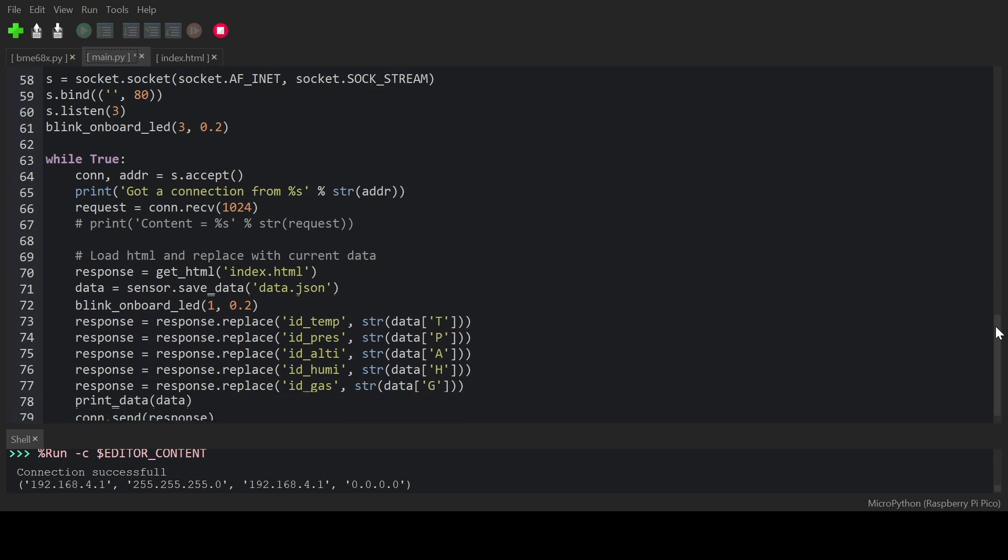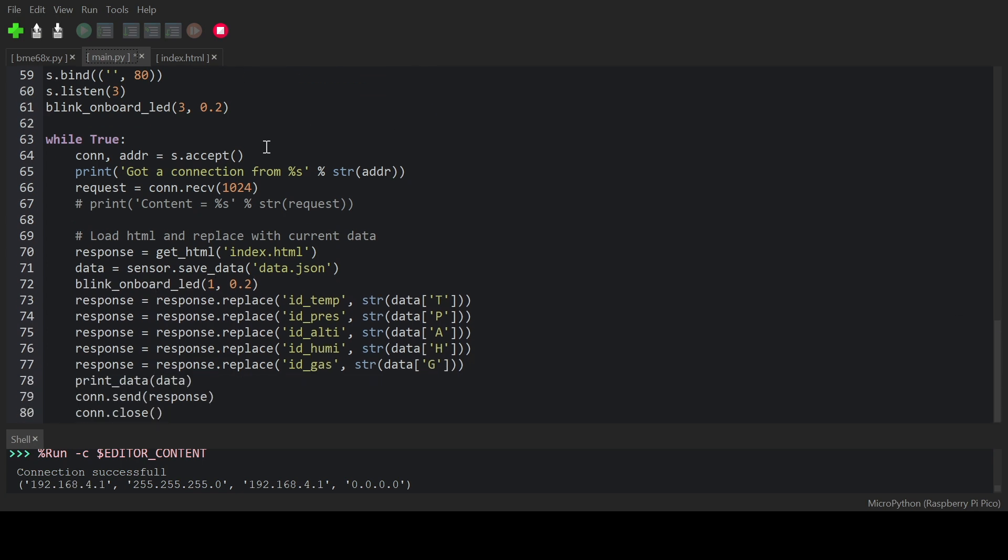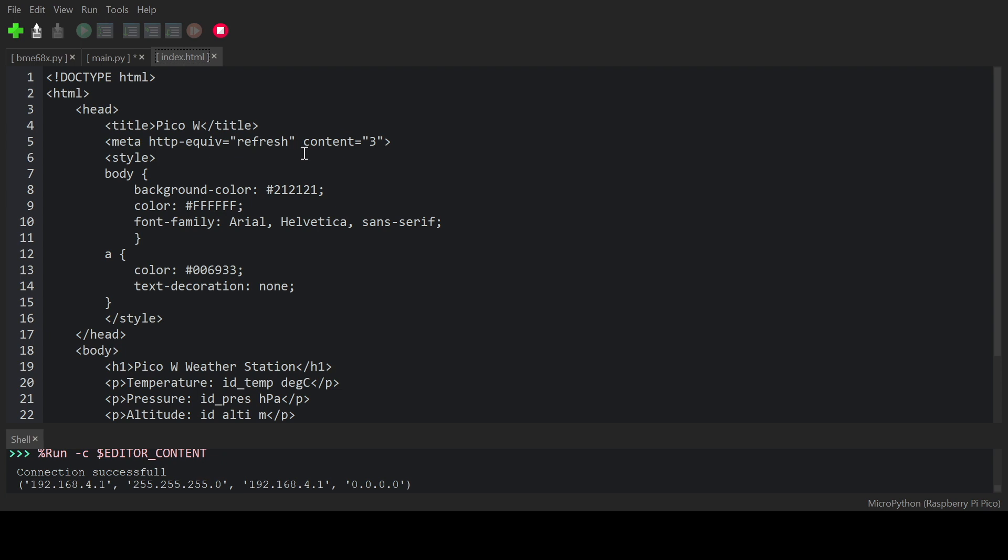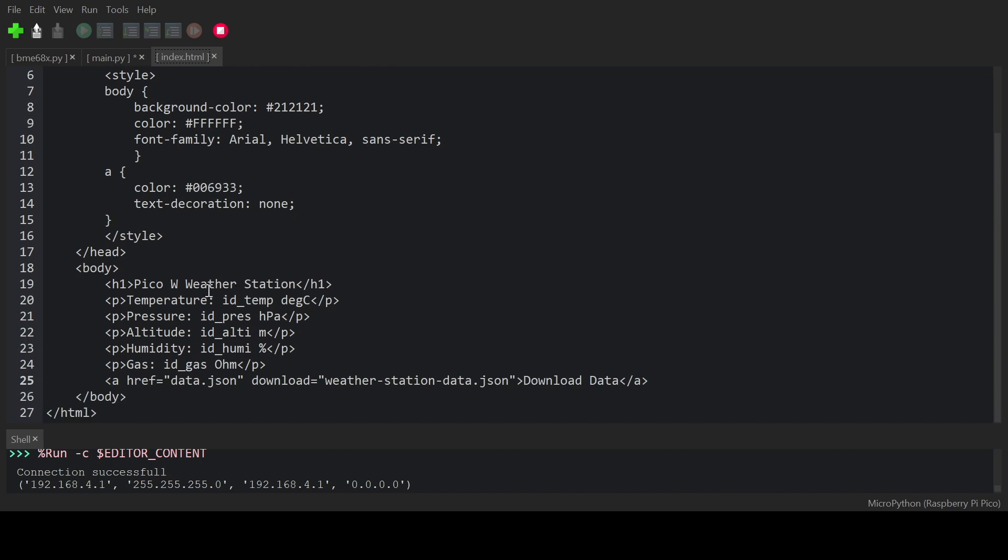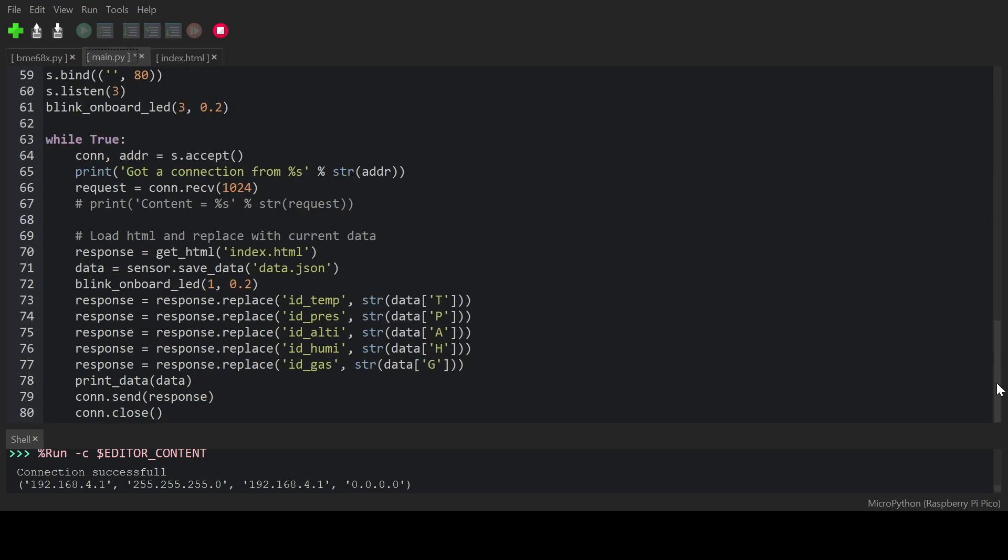In the main loop, we load the HTML file if we detect a connection. Then we trigger a measurement and replace the corresponding parts in the HTML file by the correct measurement values. The index.html is just a simple HTML file with some basic styling. There are also placeholder strings for all the parameters that we can measure with the bme688. In the header, we trigger an automatic refresh every three seconds.